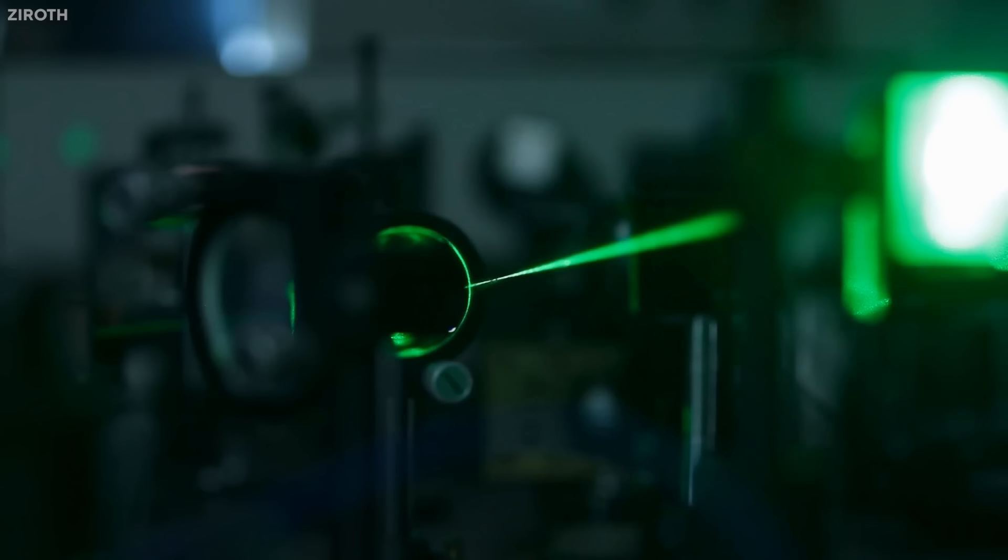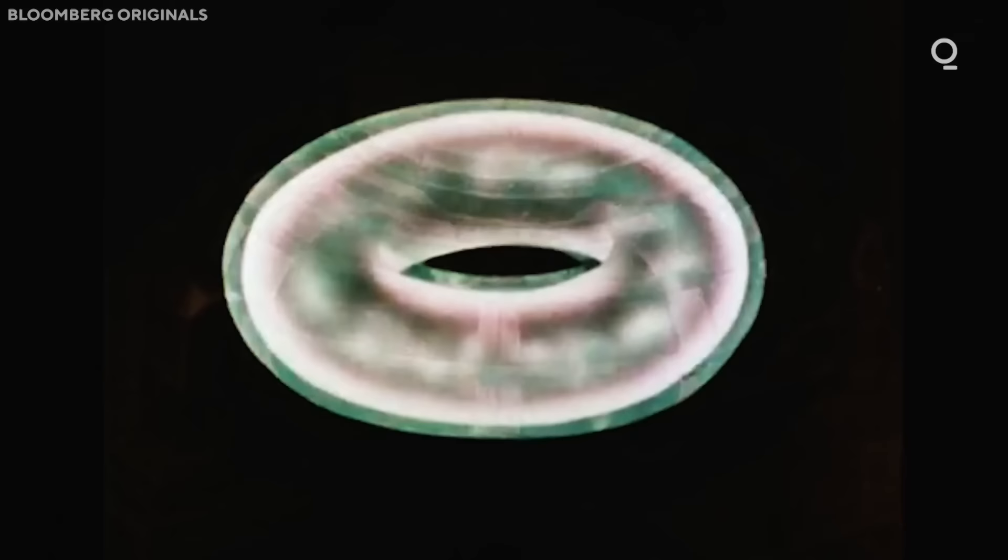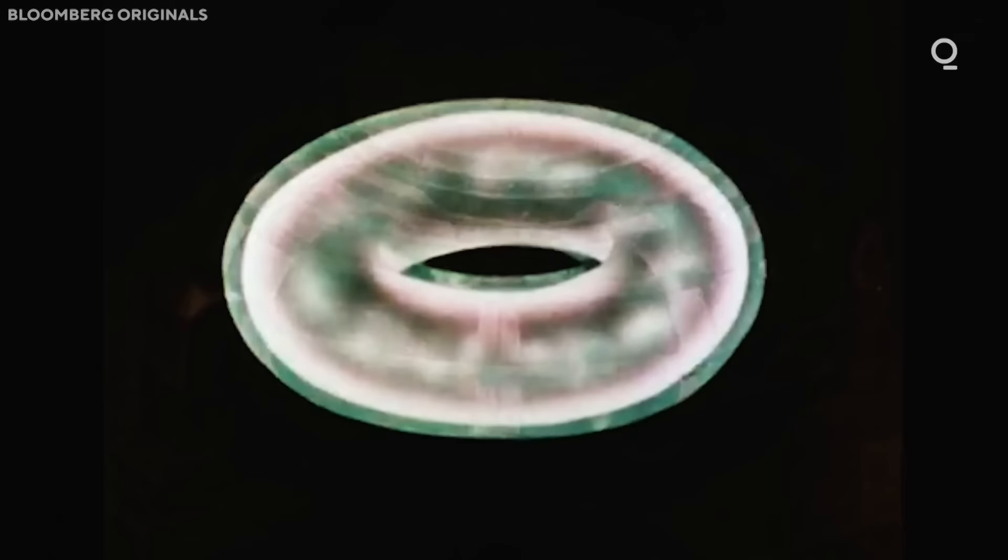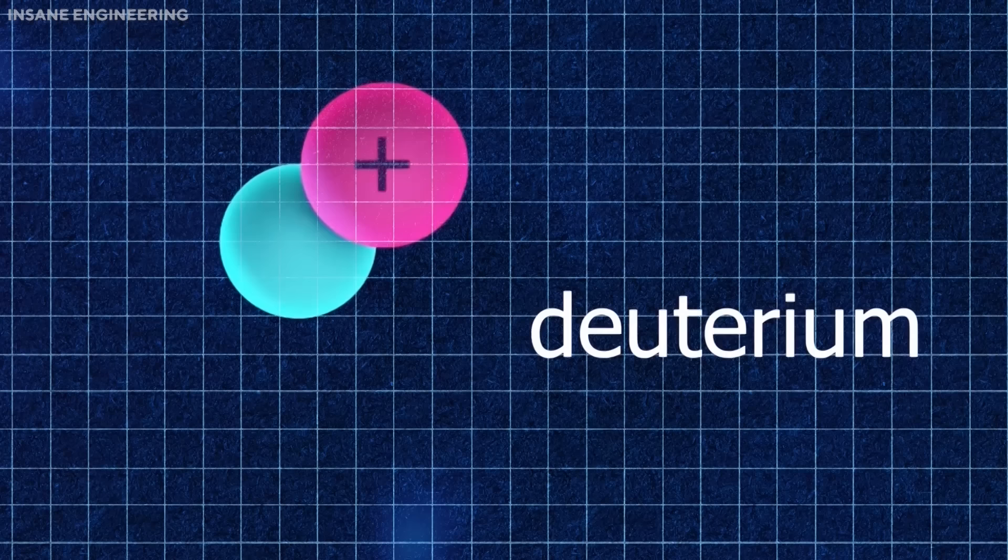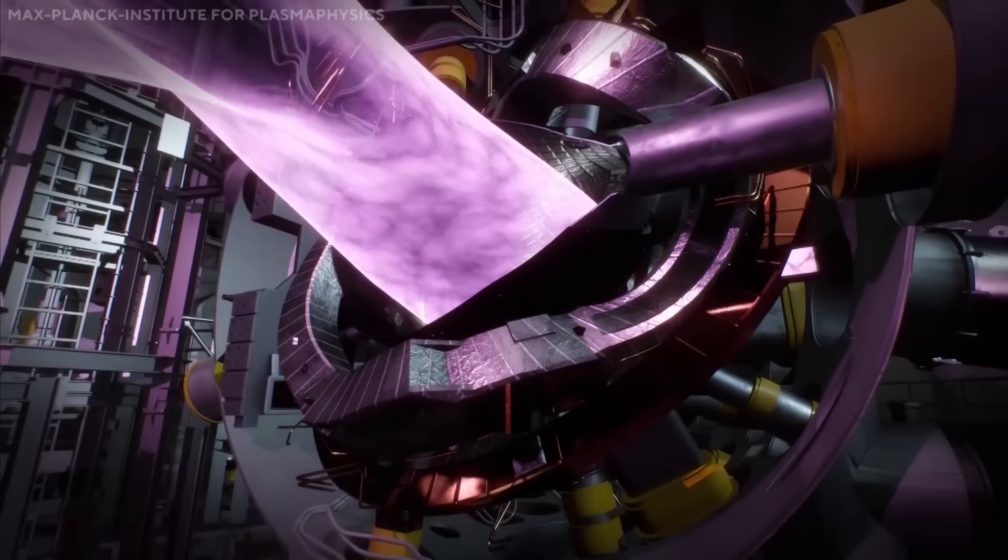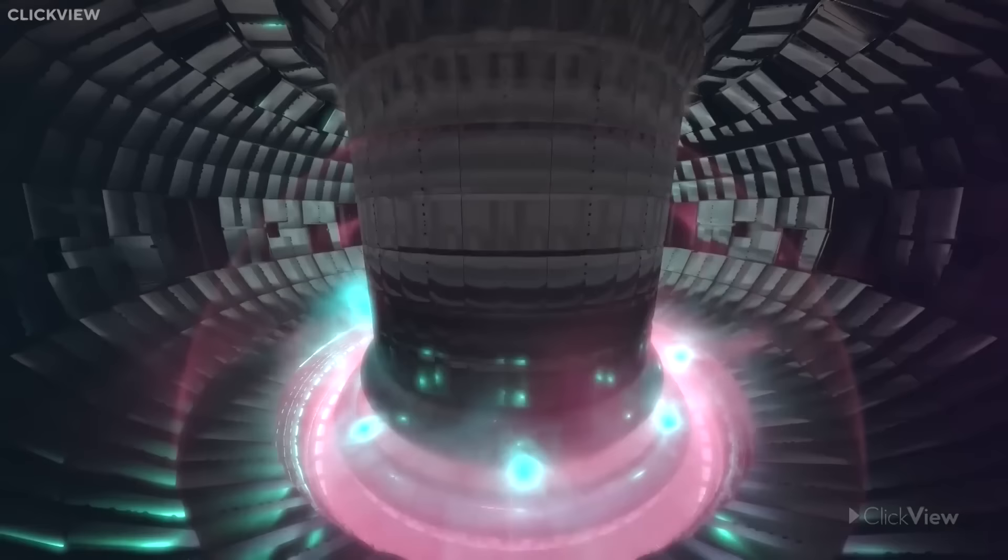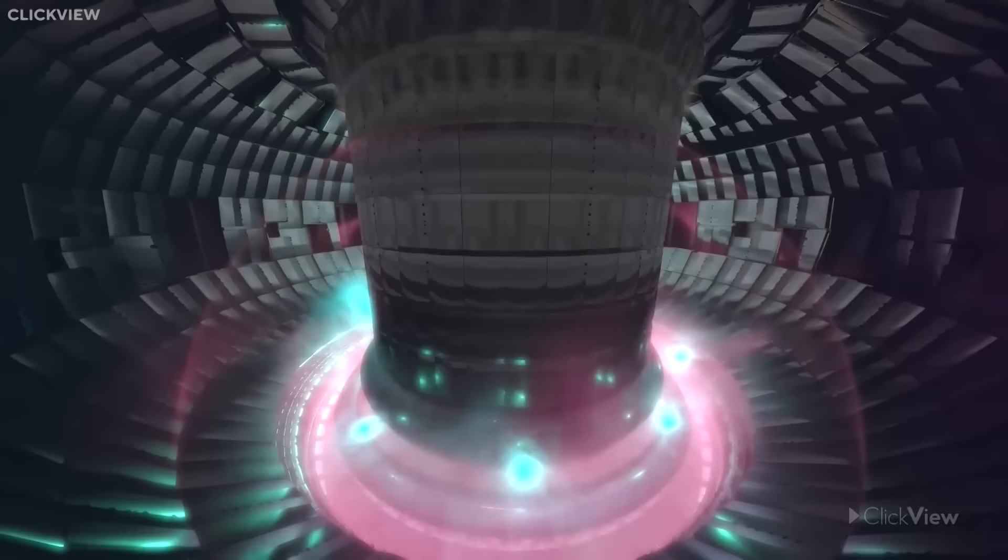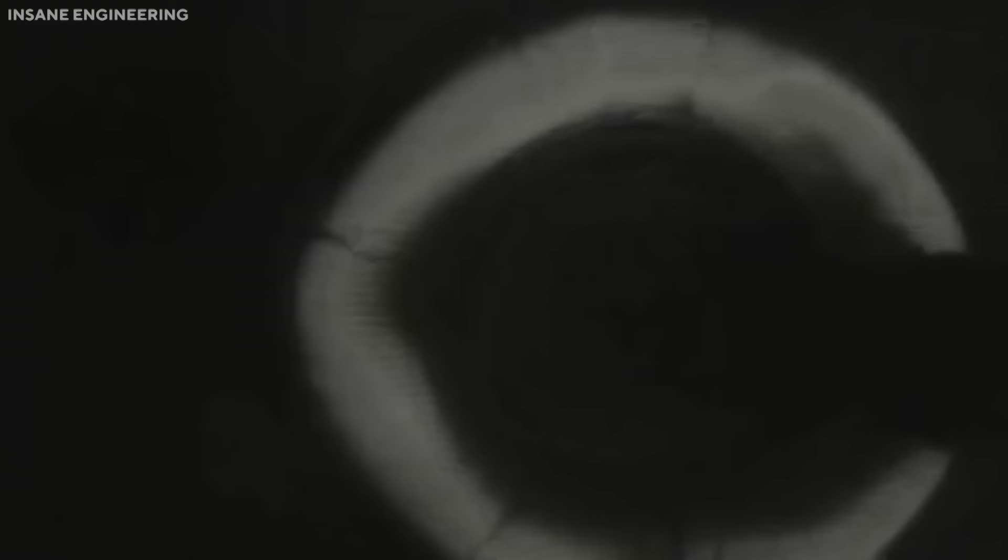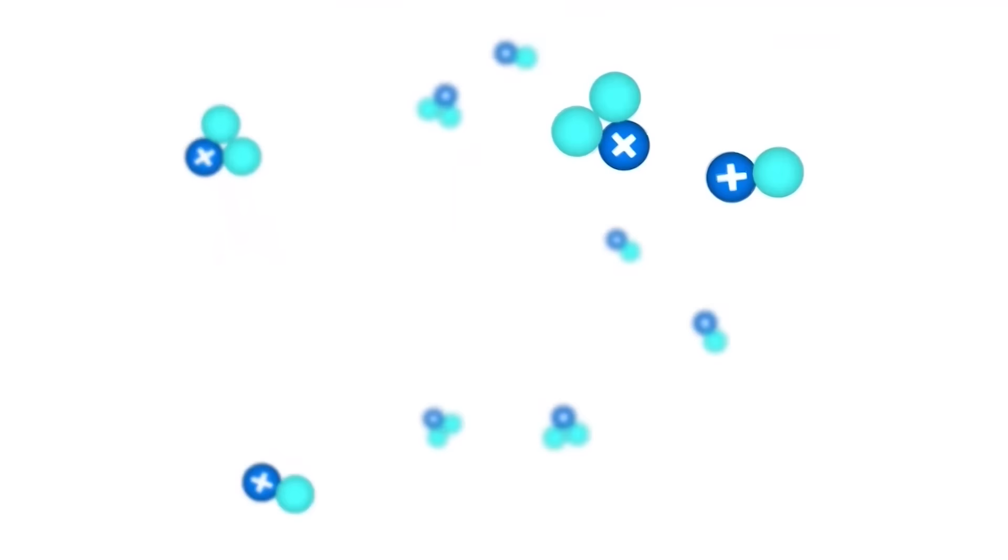Inertial confinement uses powerful lasers or particle beams to heat and compress a small pellet of fusion fuel, typically deuterium and tritium, to the point of ignition. The pellet is imploded by the radiation pressure, creating a shockwave that travels inward and raises the temperature and density of the fuel. The fusion reaction then occurs in a tiny region at the center of the pellet, releasing a burst of energy and neutrons.